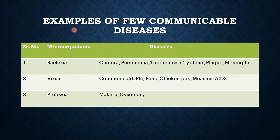Children, let's know a few examples of communicable diseases. Due to bacteria, the diseases caused are cholera, pneumonia, tuberculosis, typhoid, plague, and meningitis. Due to virus, the diseases caused are common cold, flu, polio, chickenpox, measles, and AIDS. By protozoa, the diseases caused are malaria as well as dysentery. In the next upcoming slides, I will be sharing a few symptoms of common diseases found in human beings.